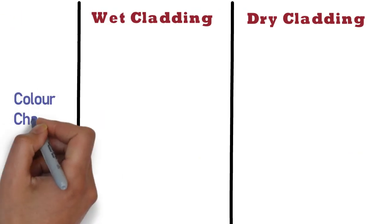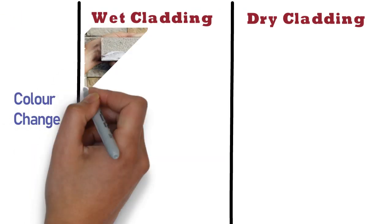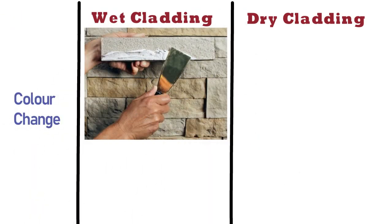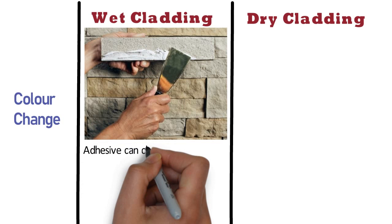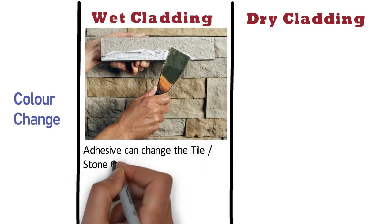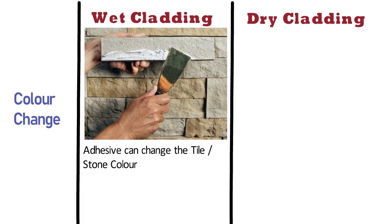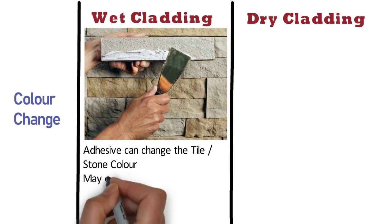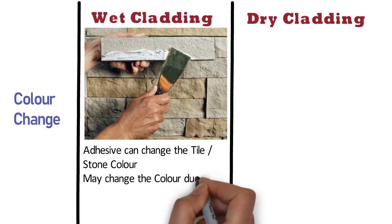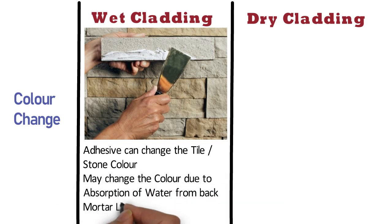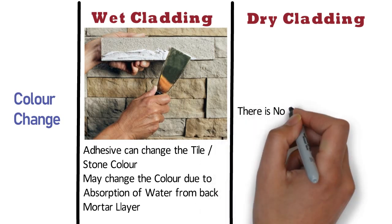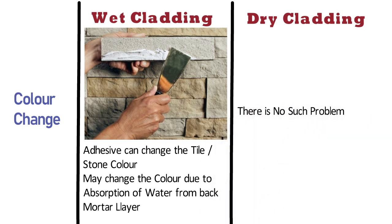Color change: If a good recommended adhesive is not used, then the adhesive can change the tile or stone color. Also, the stone fixed with mortar may change color due to absorption of water from the back mortar layer. Whereas in case of dry wall cladding, there is no such problem.